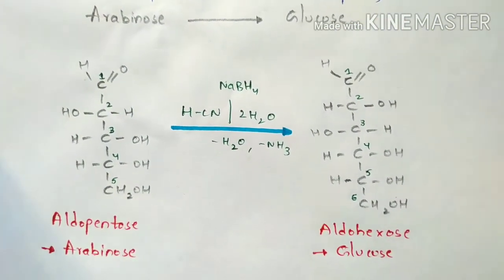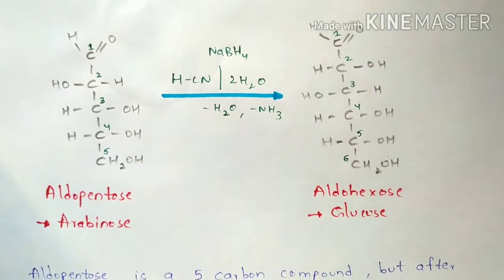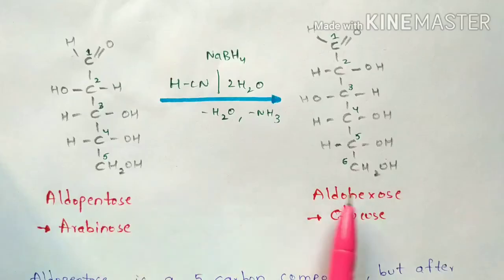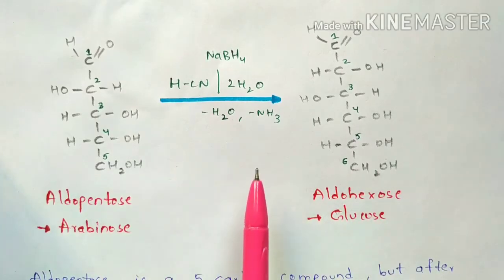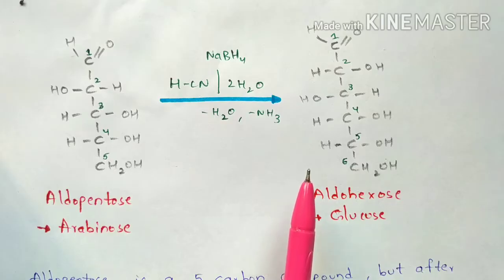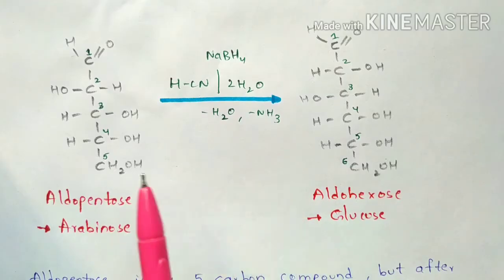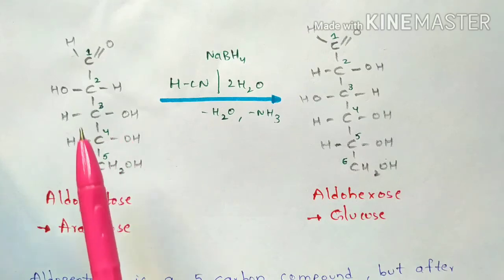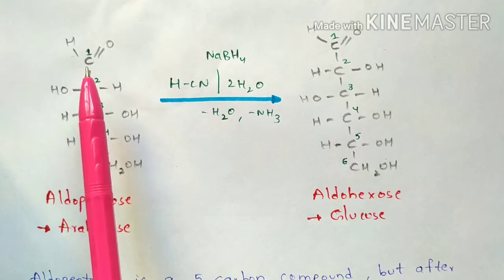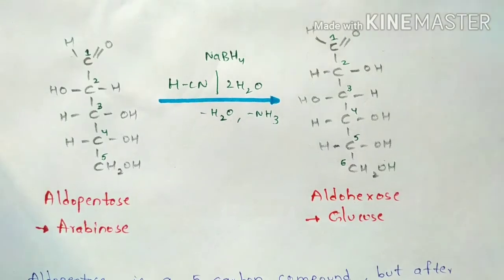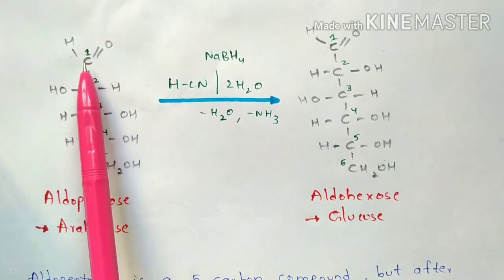The best example of aldo pentose is arabinose, and aldo hexose is glucose, which is a 6-carbon compound. In terms of structures, arabinose gets converted to glucose — aldo pentose gets converted to aldo hexose. This aldo pentose contains 5 carbons: first, second, third, fourth, and fifth carbon, with the aldehyde group (CHO) present at the first carbon.